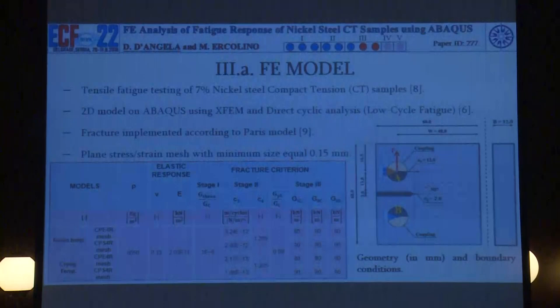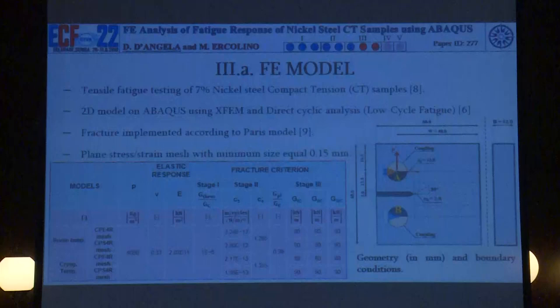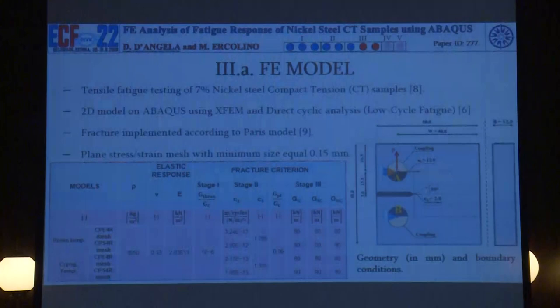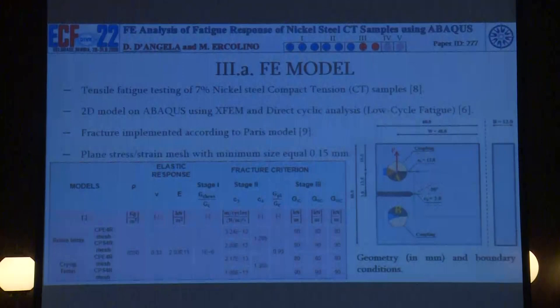We developed a finite element model using Abaqus: a two-dimensional model related to tensile fatigue testing of 7% nickel-steel compact tension samples. We combined both XFEM and direct cyclic analysis using a low-cycle fatigue approach, which is the only tool available in Abaqus. The fracture was implemented according to the Paris model, and both plane stress and plane strain conditions were considered, assuming a minimum mesh element size of 0.15 mm. On the right, you can see the geometry and boundary conditions of the model, and on the left, the values of the main mechanical fracture parameters.